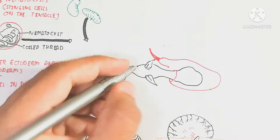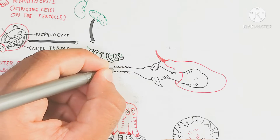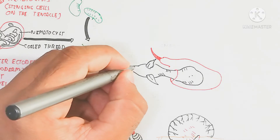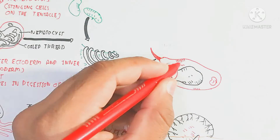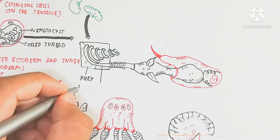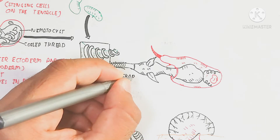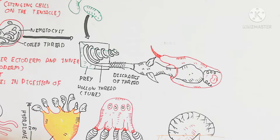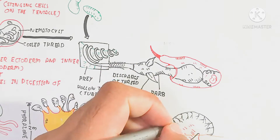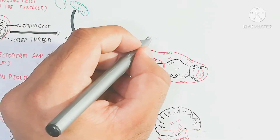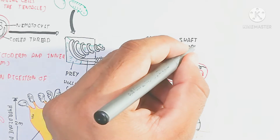The stinging cell property called cnidocyte is an important character of cnidarians, which is why this group is named Cnidaria — because they contain nematocysts. For example, hydra as predator uses stinging cells to capture prey. The stinging cell attaches a thread which shoots out under pressure from a lasso mechanism. The prey is wrapped by the thread, which is a hollow sticky structure that suddenly attacks.